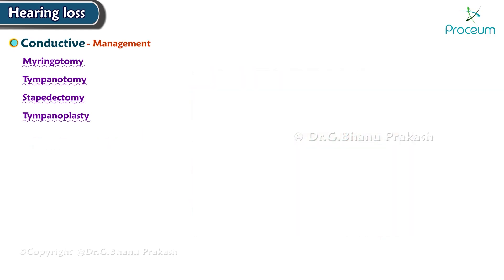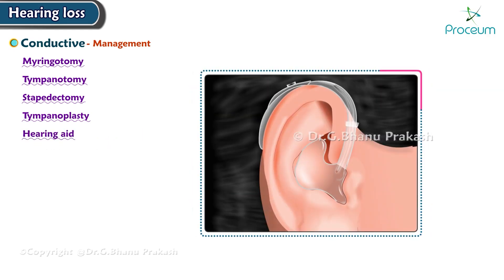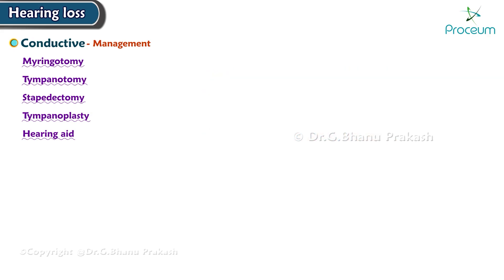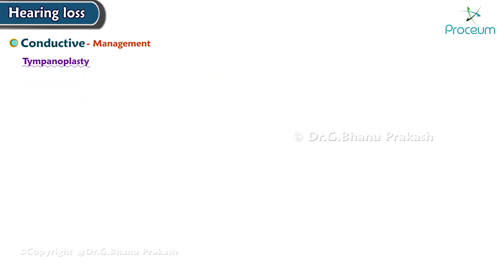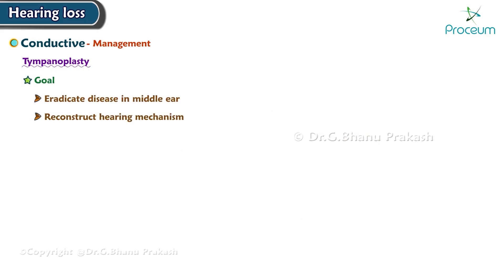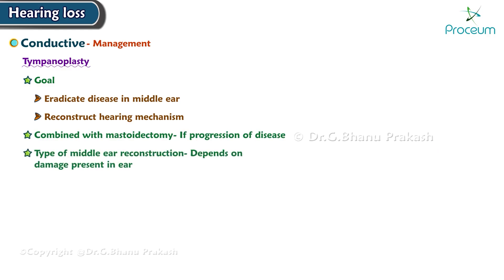A hearing aid is used in cases where surgery is not possible, is refused, or has failed. Tympanoplasty is an operation to eradicate disease in the middle ear and reconstruct the hearing mechanism. It may be combined with mastoidectomy if there is progression of disease. The type of middle ear reconstruction depends on the damage present in the ear.